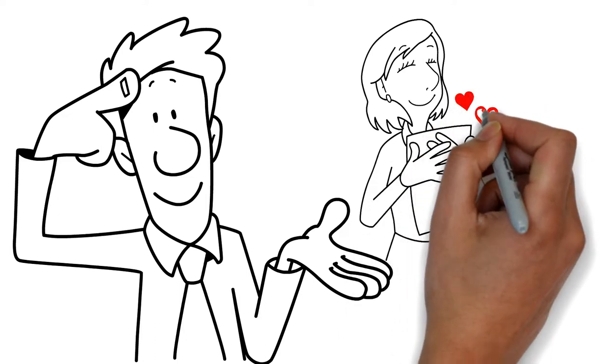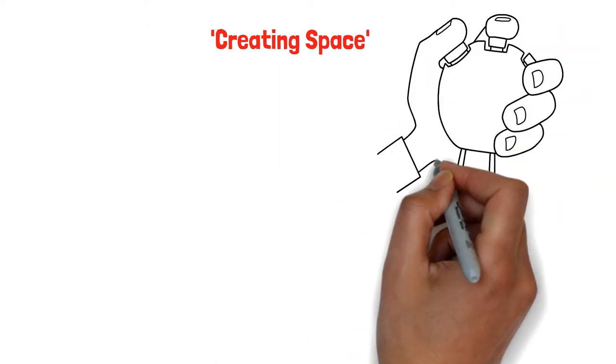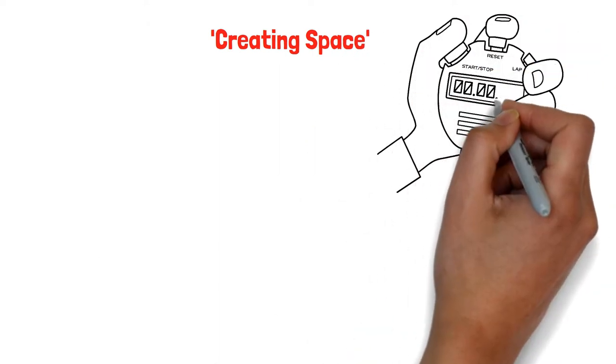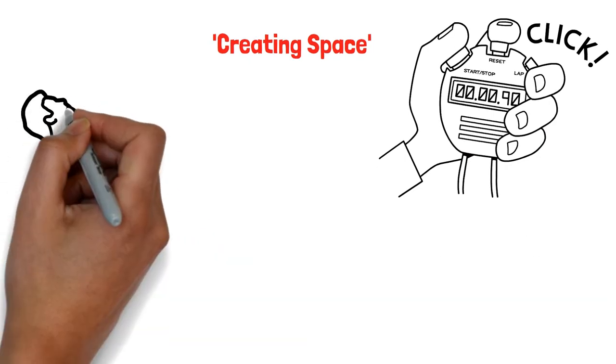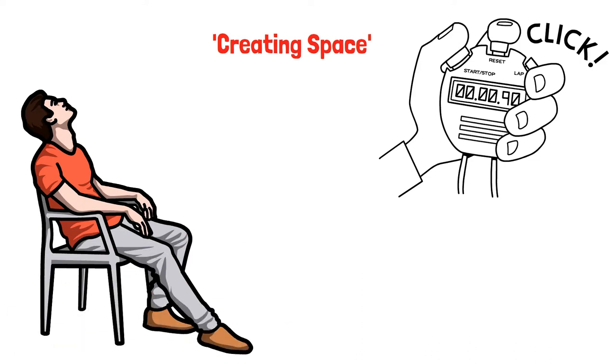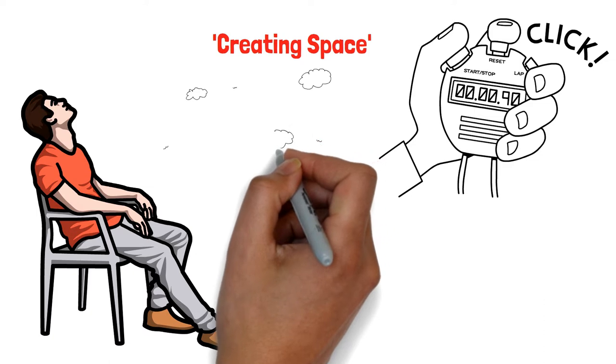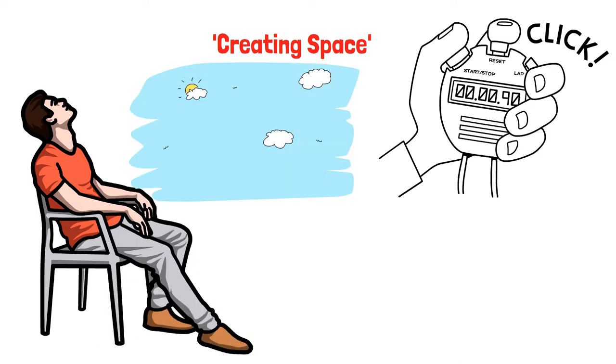He recommends trying an exercise called creating space for five minutes each day for the next week to get things going. You can start by sitting down comfortably and then closing your eyes. Next, imagine you are surrounded by an endless blue sky. Try to have this image as clear as possible, and if you see that you have become distracted, then you can just gently return your attention to the endless space.